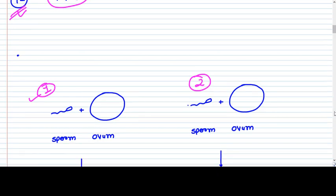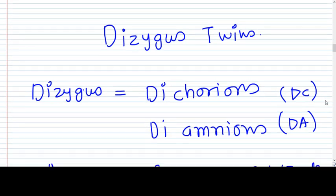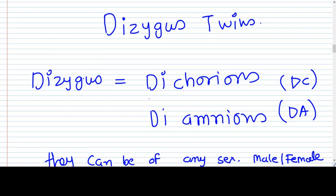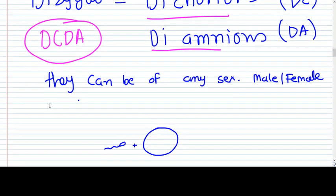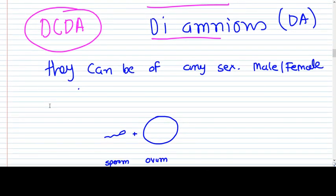So dizygotic twins are always dichorionic diamniotic (DC/DA). They can be of any sex — either male or female. I want this concept to be understood clearly.